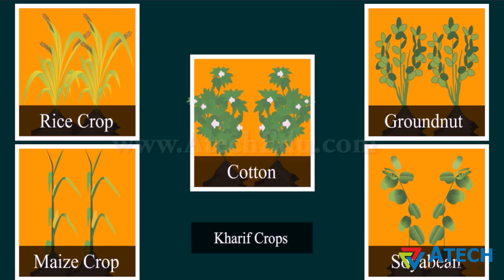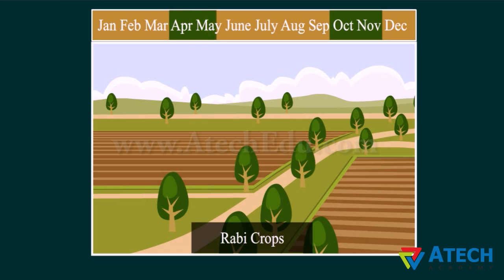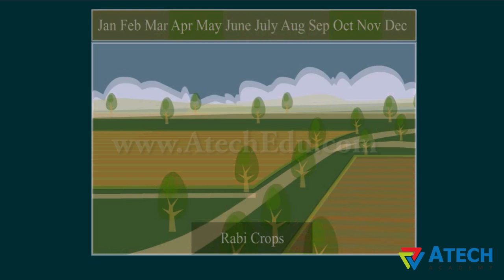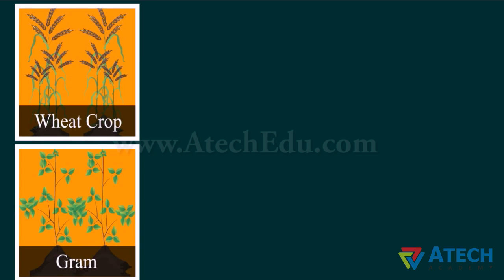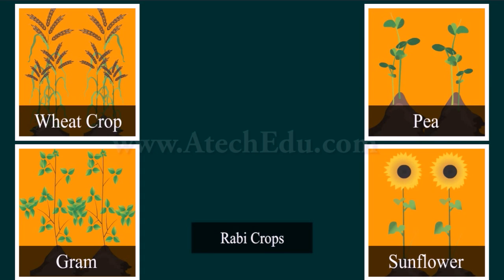Crops that are grown during the winter season are Rabi crops. They are sown in the months of October and November and harvested in the months of April and May. Some examples of Rabi crops are wheat, gram, pea, and sunflower.